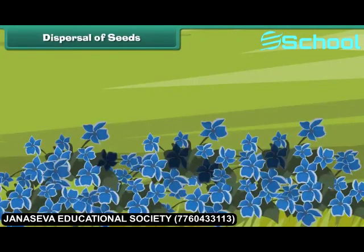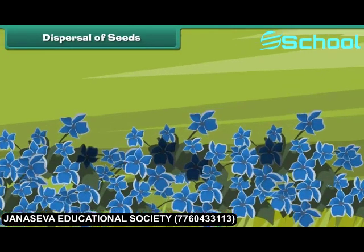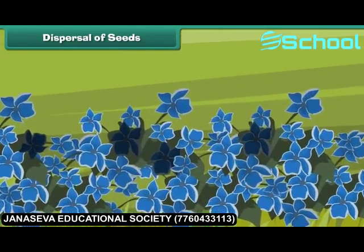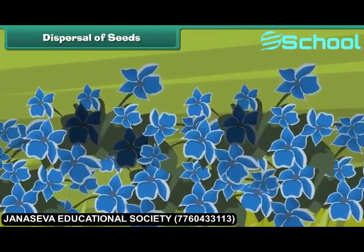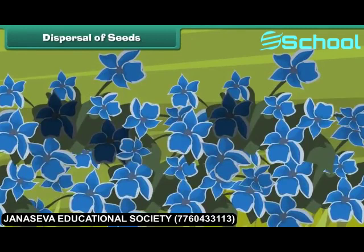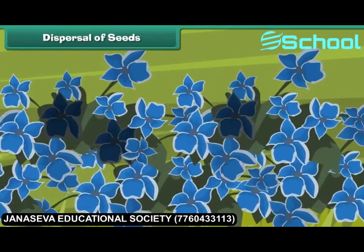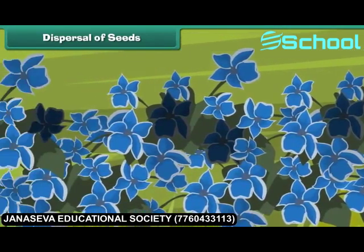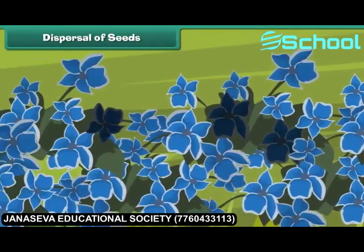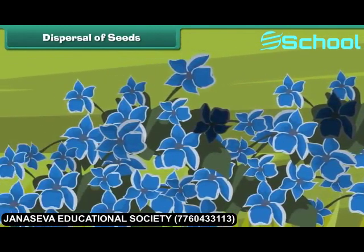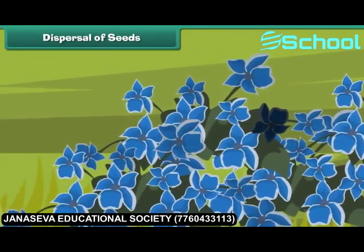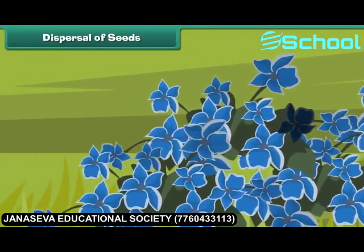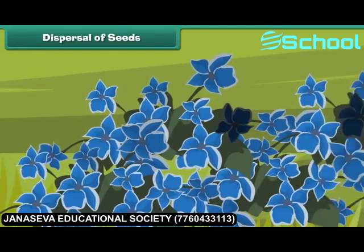Dispersal of seeds: What will be the condition of an area where all the seeds are grown near the parent plants? There will certainly be a shortage of space, water, minerals and sunlight, so all the plants will not grow properly.